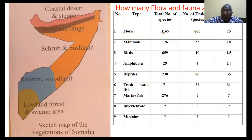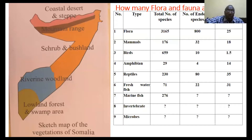On the right side I have put data on how many flora and fauna are found in Somalia. Flora of Somalia: we have 3,165 species recorded and documented. 800 of them are endemic to Somalia, and the endemism increases from south to north — if you move northward you will find many more endemic plant species.